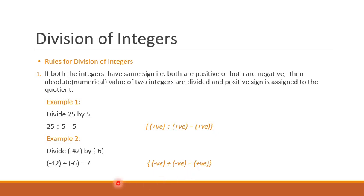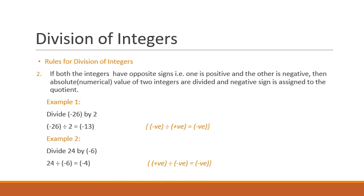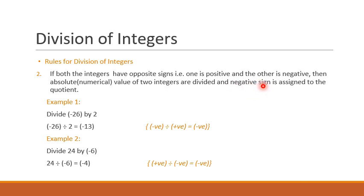Now let's see the next rule, that is the second rule. If both the integers have opposite signs, that is one integer is positive and the other is negative, then the absolute value of the two integers are divided and negative sign is assigned to the quotient. So if the two integers have opposite sign, the quotient will have negative sign.